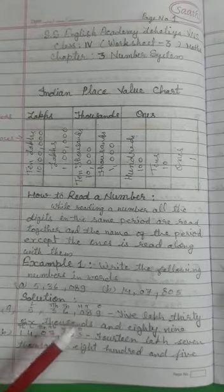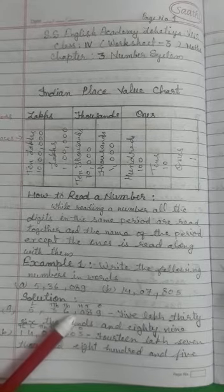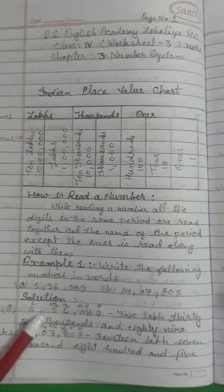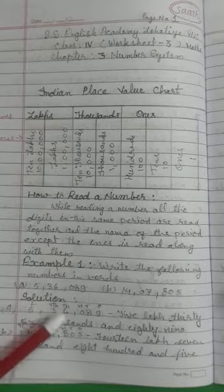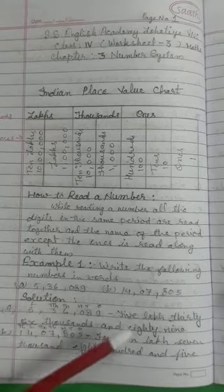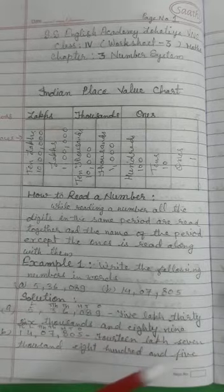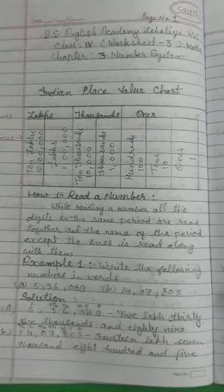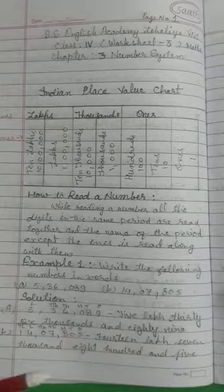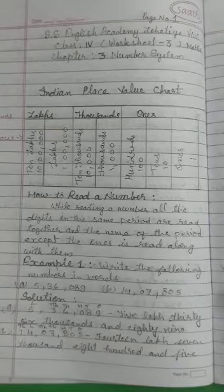Students, after the ones period, you put a comma, and then after the thousands period, you put a comma. Now write this number in words: five lakh, thirty-six thousand and forty-nine. Do the second example in the same way.